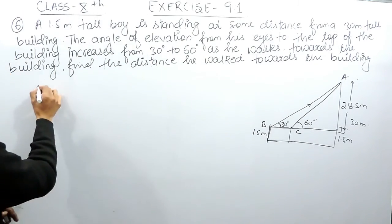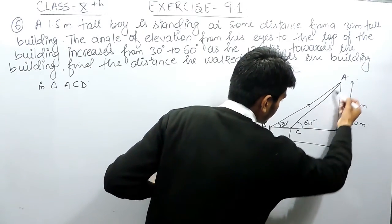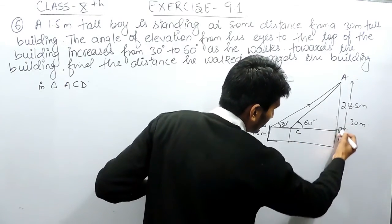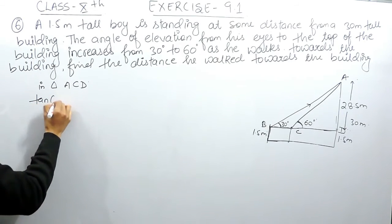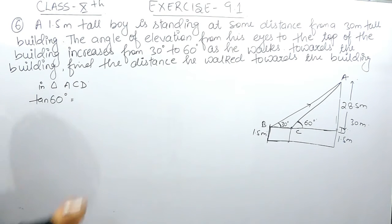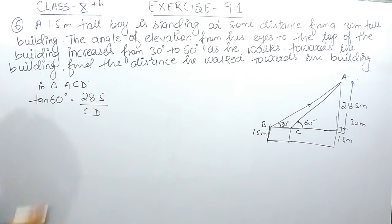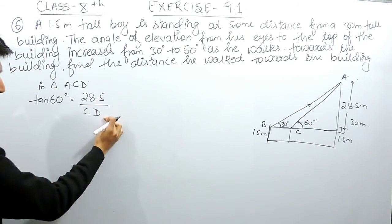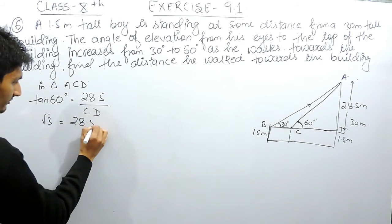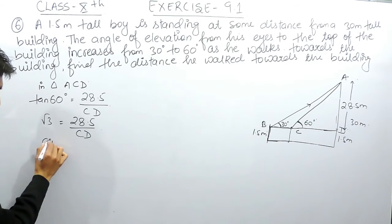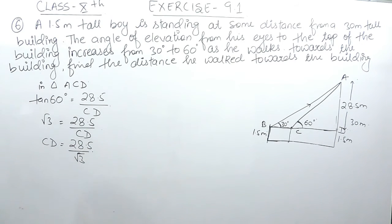First, let's find CD using triangle ACD. In triangle ACD, the perpendicular is 28.5 and the base CD is what we need. Using tan(θ) = perpendicular / base, with θ = 60°: tan(60°) = 28.5 / CD. Since tan(60°) = √3, we get √3 = 28.5 / CD, so CD = 28.5 / √3.